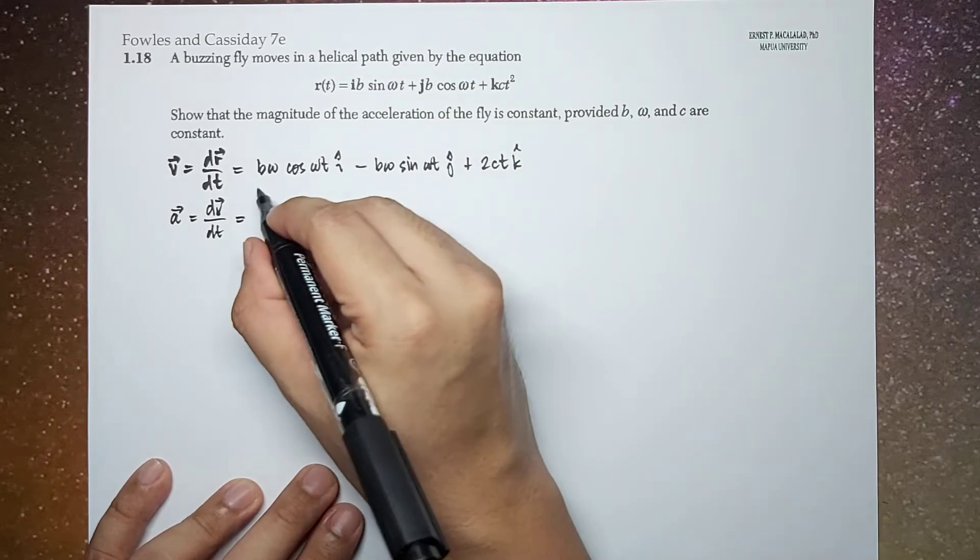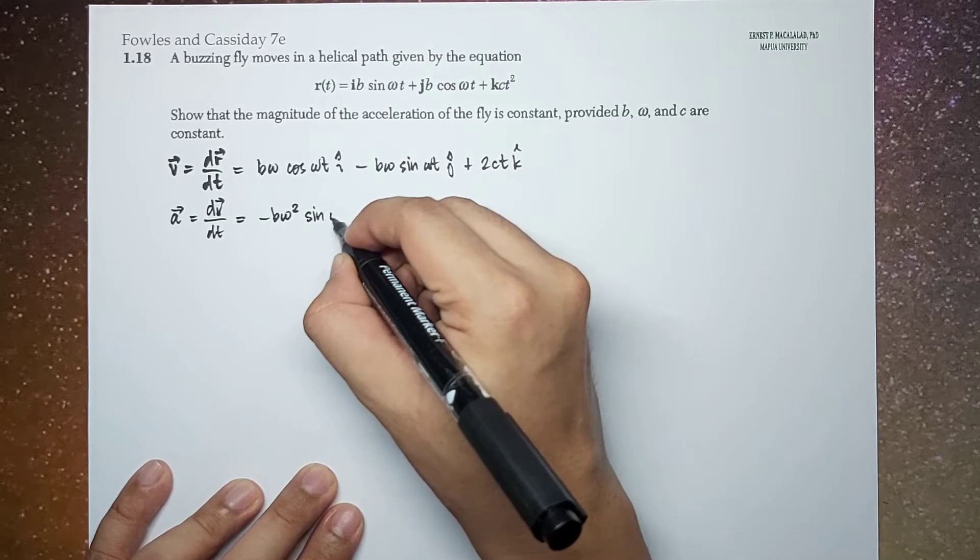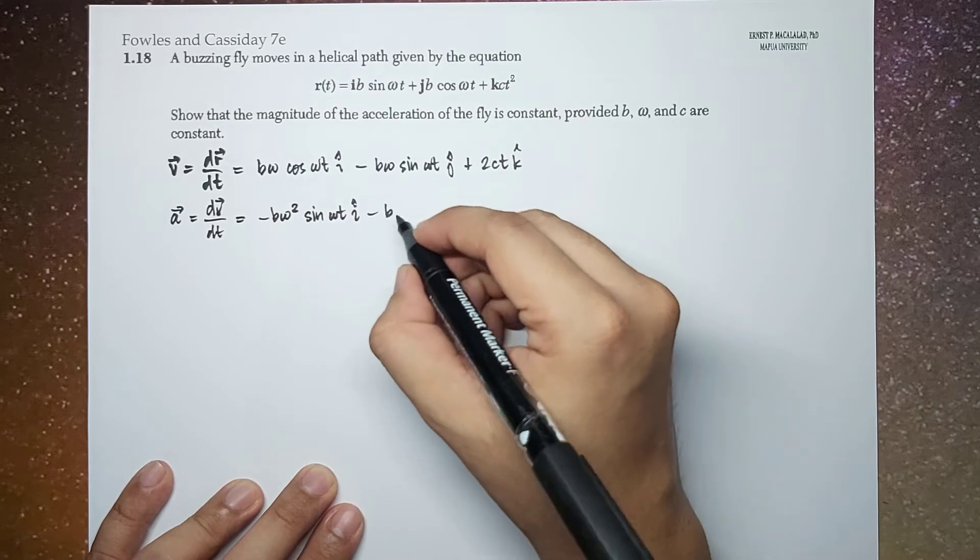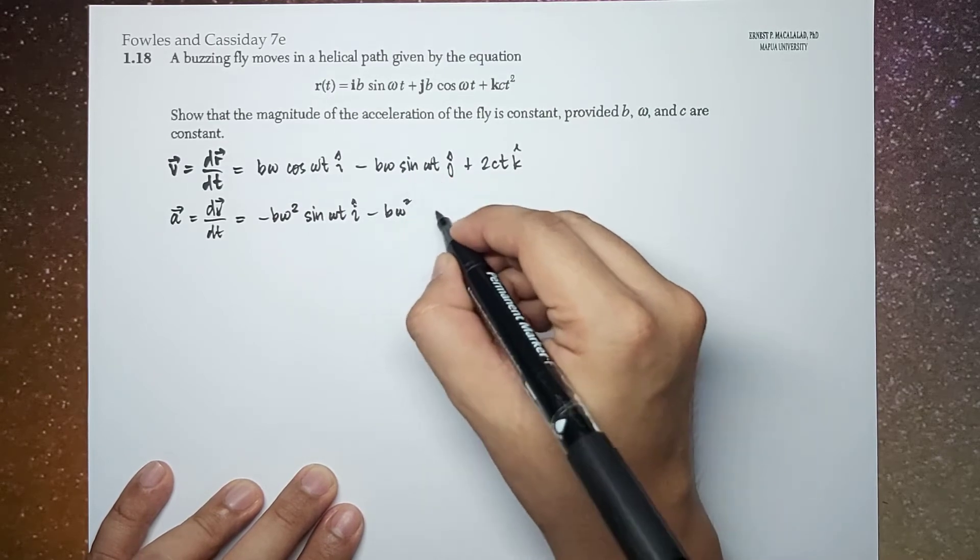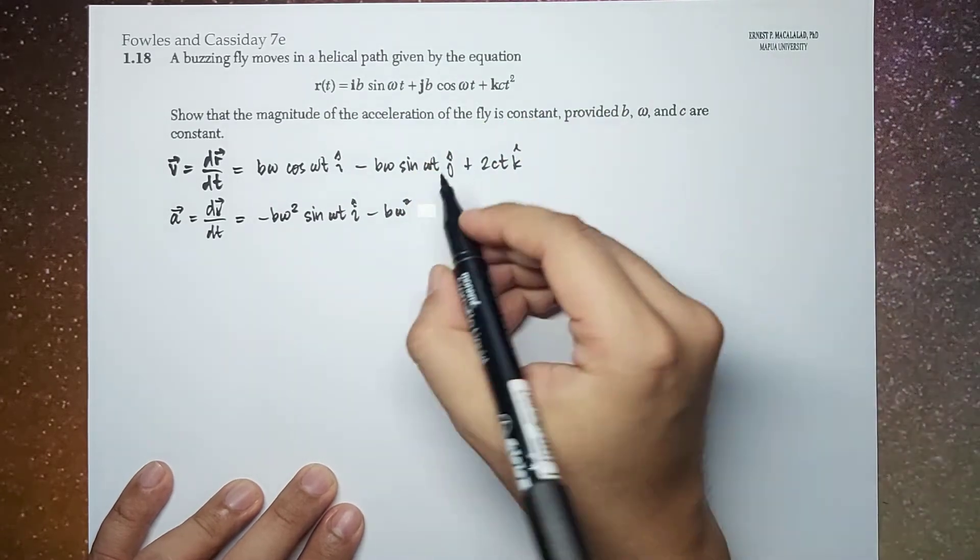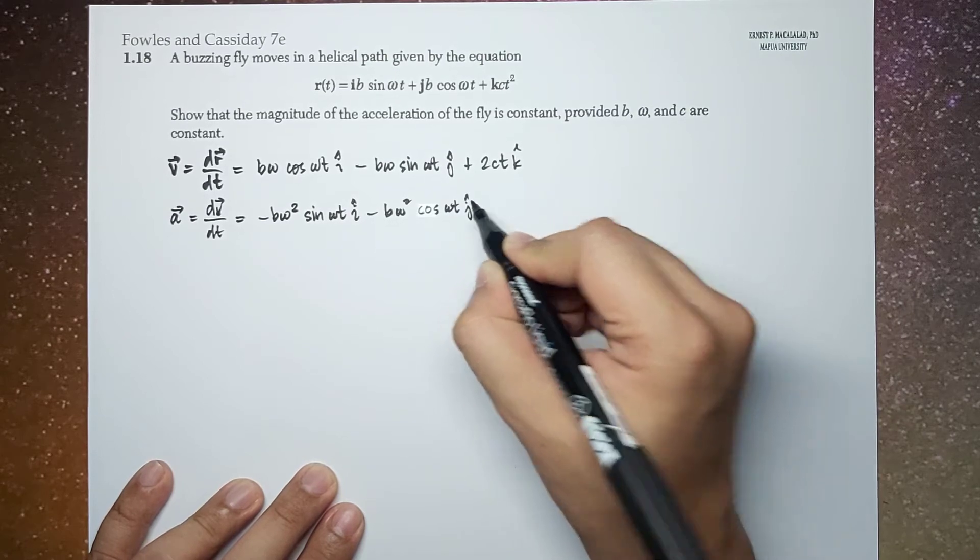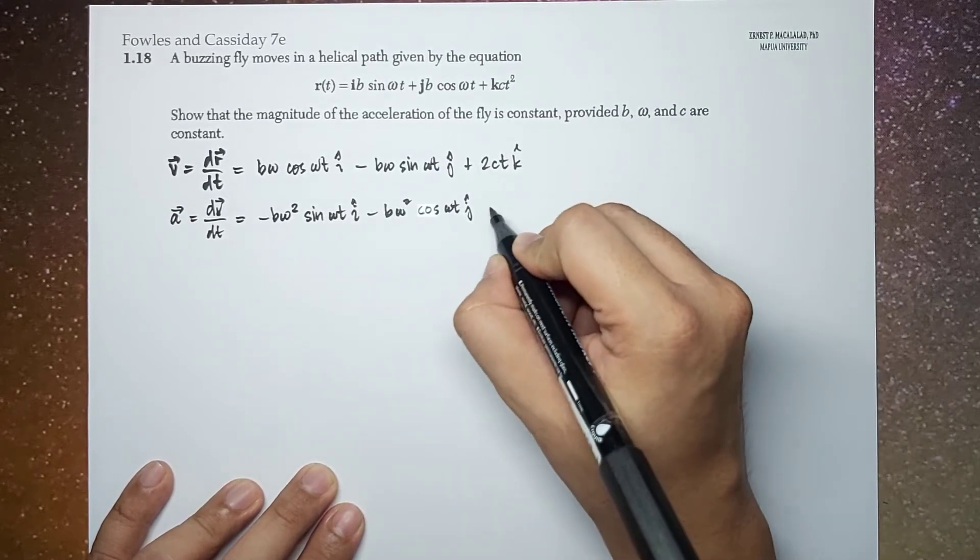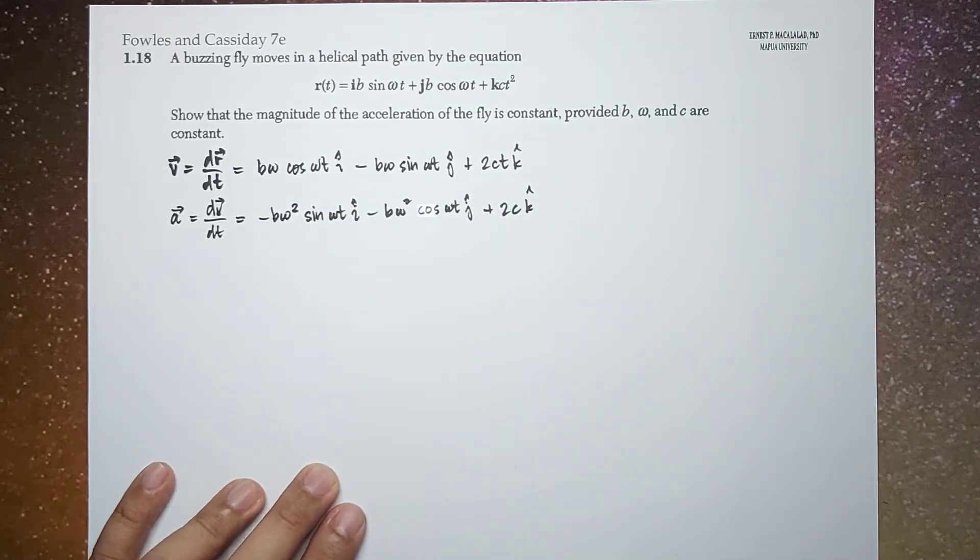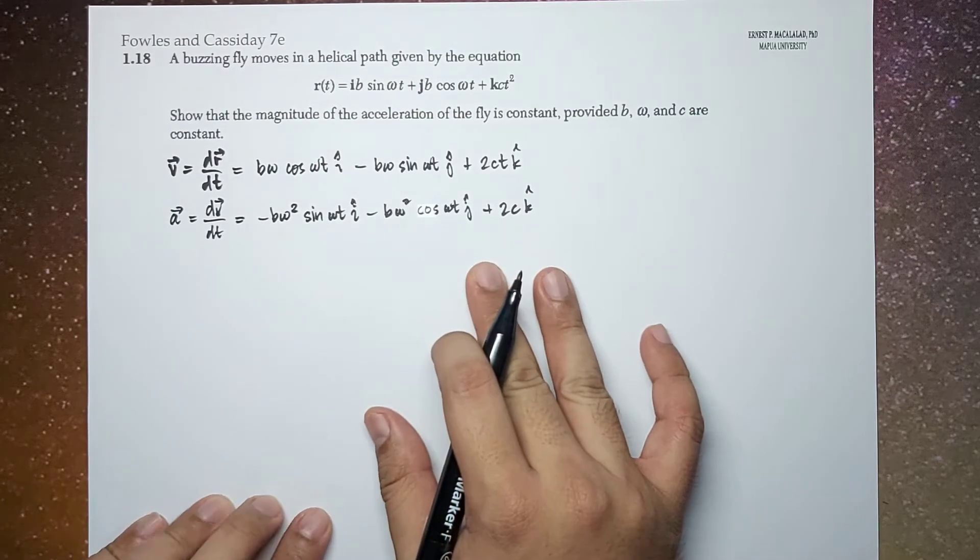And this gives us negative b omega squared sine omega t i hat minus b omega squared cosine omega t j hat plus 2 c k hat. So this is now the acceleration.